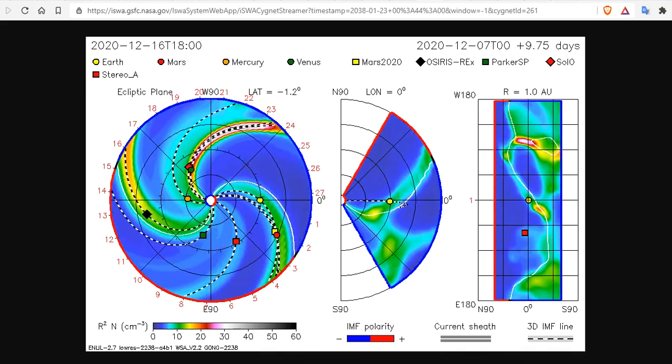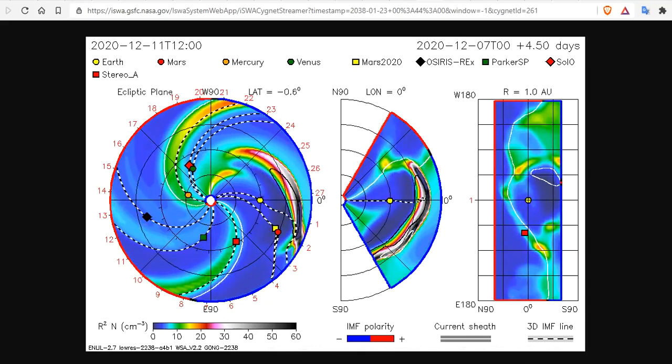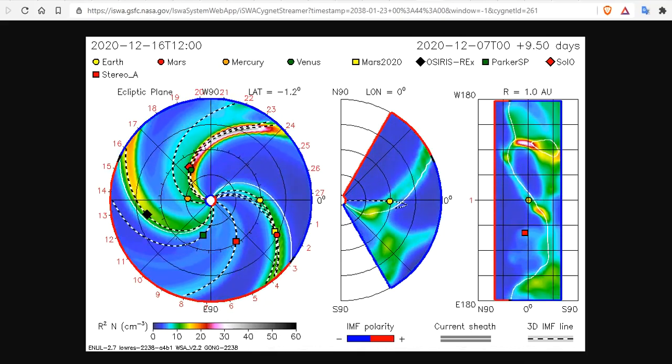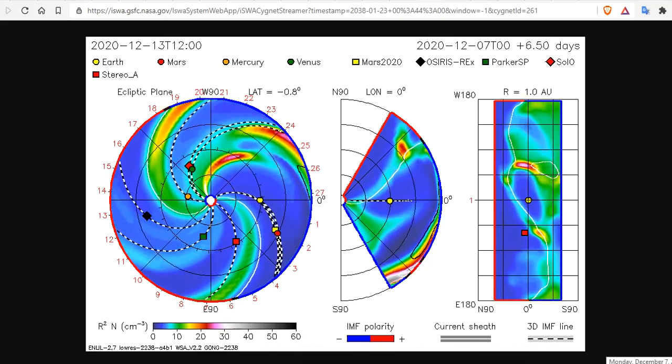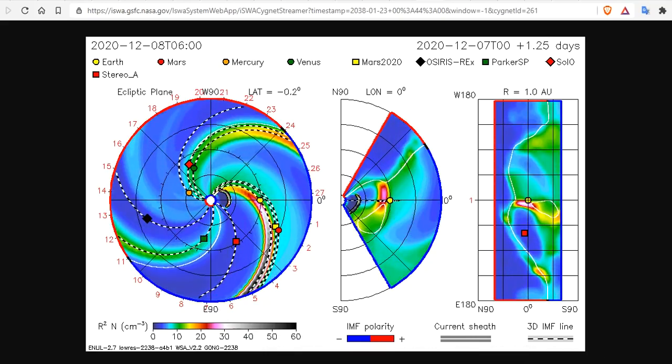Good evening, folks. It's Diamond with the Oppenheimer Ranch Project Magnetic Reversal News and Shinrin Yoku, bringing you a space weather news update Monday, December 7th, around 7 p.m. Mountain Time 2020.